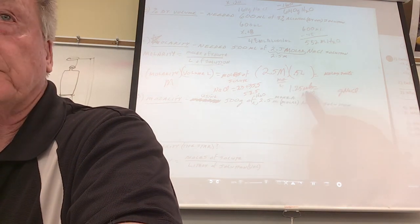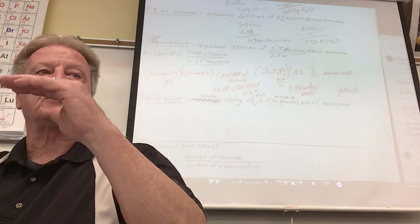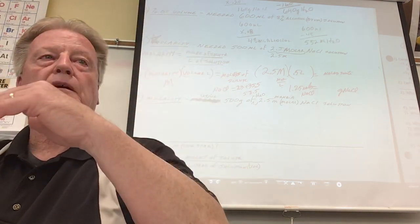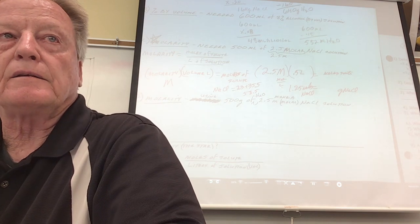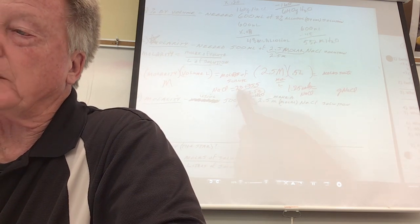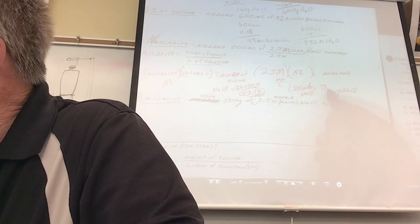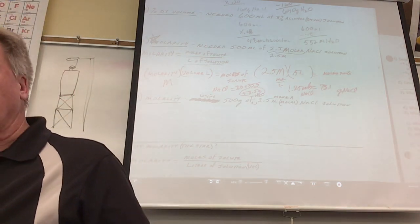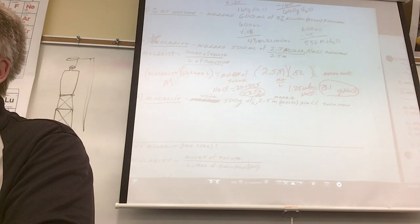The equation told me I need 1.25 moles of NaCl. Remember from last chapter: if you have 1.25 moles, how do you change moles into grams? Multiply by molar mass. The molar mass of sodium chloride is 58.5 grams. So 1.25 times 58.5 gives 73.1 grams of NaCl. Now how am I going to make this solution — what do you do with 73.1 grams of NaCl?